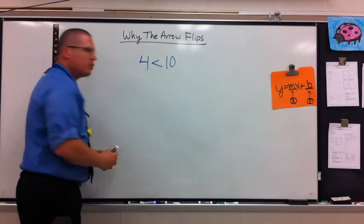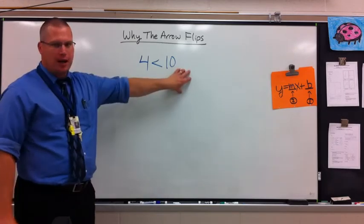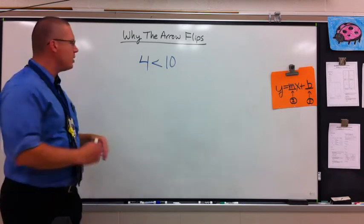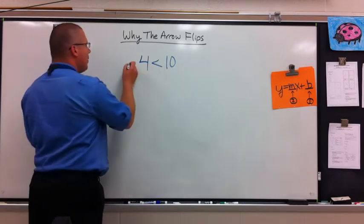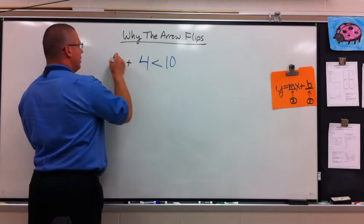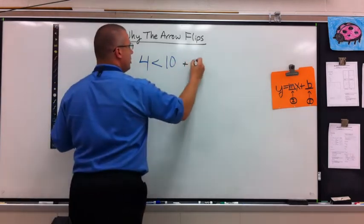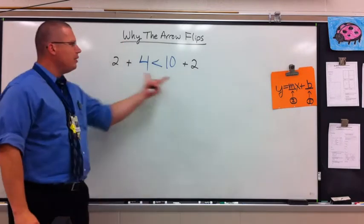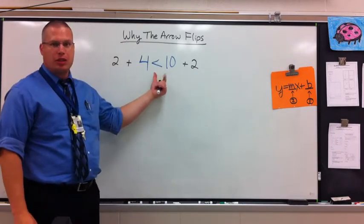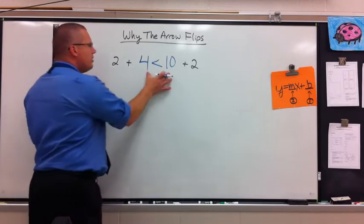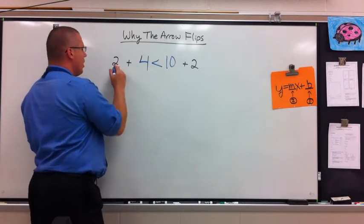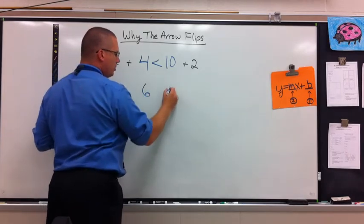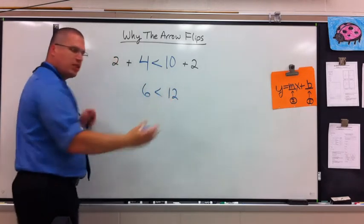You can start applying things to both sides — I can add things to both sides or I can multiply things to both sides. Watch what happens if I add something to both sides, like adding 2 to both sides. Does adding 2 change the arrow? Does it change my inequality? Well it changes the inequality, but it's not going to change the arrow. 2 plus 4 is 6, and 10 plus 2 is 12.